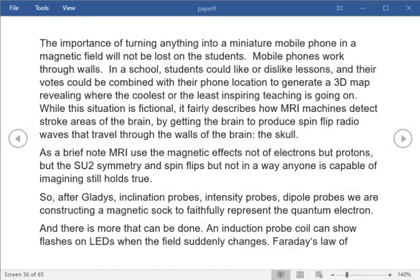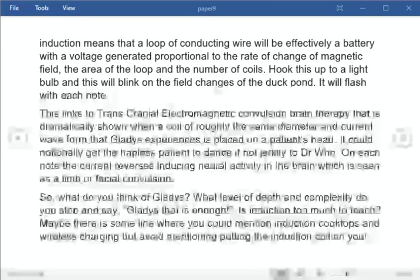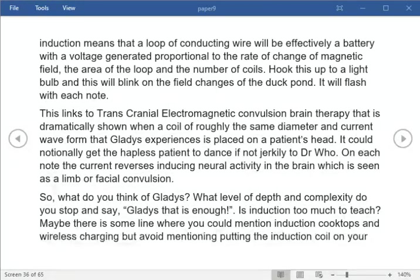While this situation is fictional, it fairly describes how MRI machines detect stroke areas of the brain by getting the brain to produce spin flip radio waves that travel through the walls of the brain, the skull. So, after Gladys, inclination probes, intensity probes, dipole probes we are constructing a magnetic sock to faithfully represent the quantum electron. And there is more that can be done. An induction probe coil can show flashes on LEDs when the field suddenly changes. Faraday's law of induction means that a loop of conducting wire will be effectively a battery with a voltage generated proportional to the rate of change of magnetic field, the area of the loop, and the number of coils. This links to transcranial electromagnetic convulsion brain therapy that is dramatically shown when a coil of roughly the same diameter and current waveform that Gladys experiences is placed on a patient's head. On each note the current reverses inducing neural activity in the brain, which is seen as a limb or facial convulsion. So, what do you think of Gladys? What level of depth and complexity do you stop and say, Gladys that is enough?